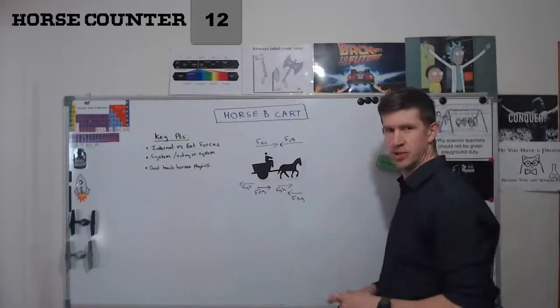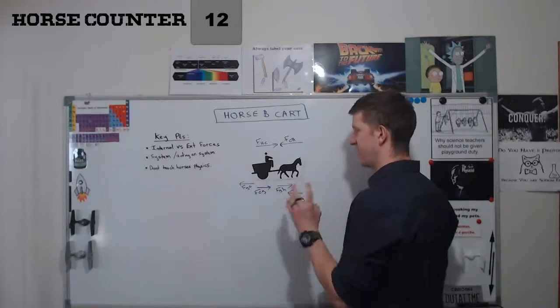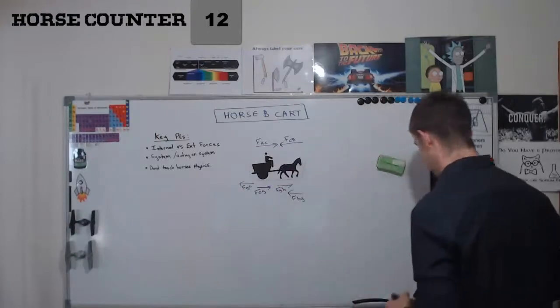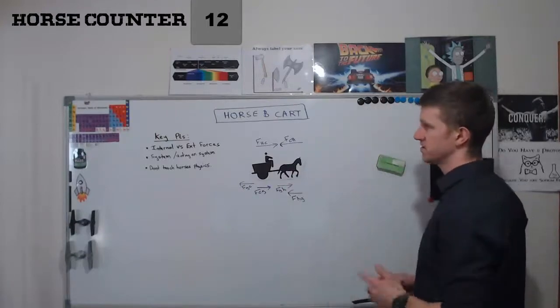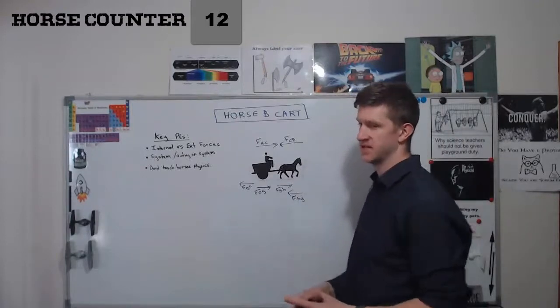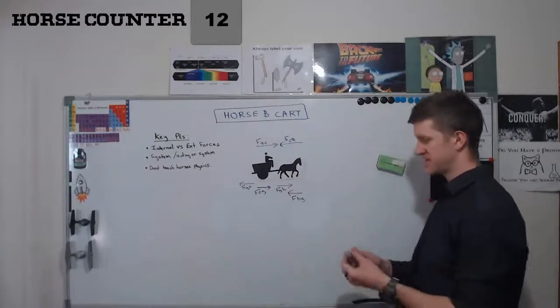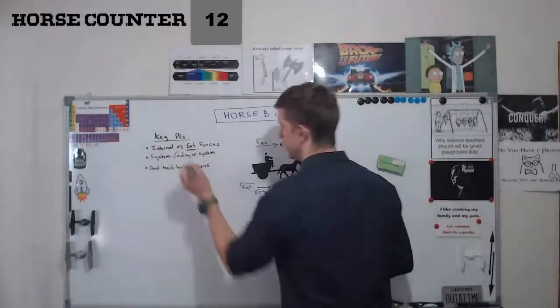The important thing here is to look at the system. And what we mean by system is everything that is affecting a certain thing. So Newton's first law says that an object at rest or in motion will remain at rest or in motion unless acted upon by an external force. And the external part is the crucial bit.